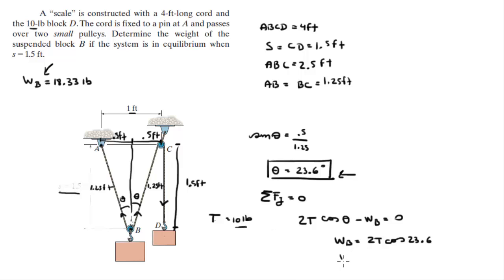So when you apply that into your calculator, you get that the weight of the block is equal to 18.33 pounds, like the back of the book says. So final answer, I think the book made a mistake and that's what they meant to say.